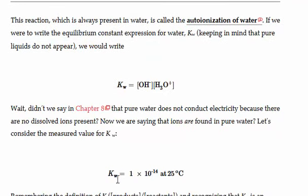The numerical value of KW at 25 degrees Celsius is 1 times 10 to the minus 14th. So in pure water, the concentration of hydroxide and hydronium are incredibly small.